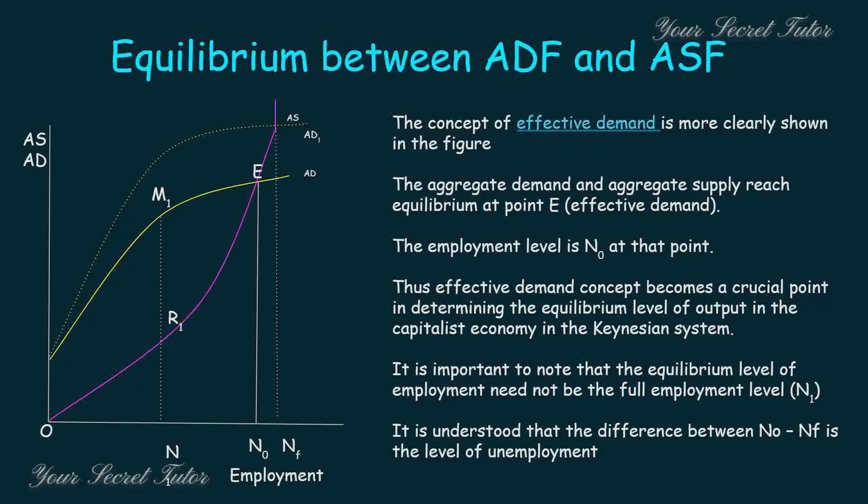This is totally against classical economists. Looking at aggregate demand, aggregate supply function, and effective demand together, the equilibrium between Aggregate Demand Function and Aggregate Supply Function shows that the two functions operate in the same framework.